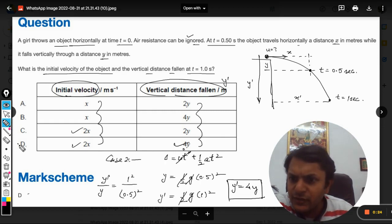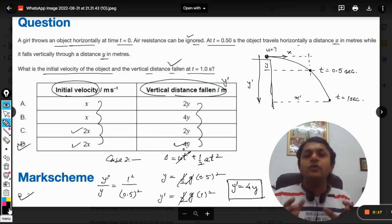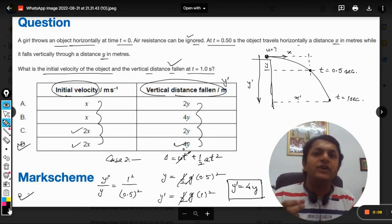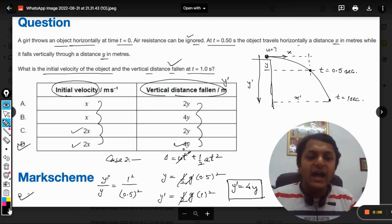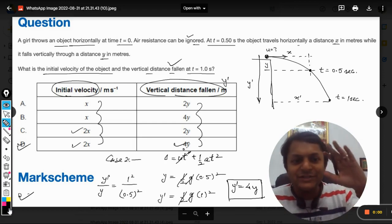So our answer is d, as shown here. My dear students, because the time is limited, I have to close the video. But you can rewind and see it again. What I have done is in the two cases I found the vertical distances traveled, divided them to compare, and found y dash in terms of y. So with this, all the best. Bye.